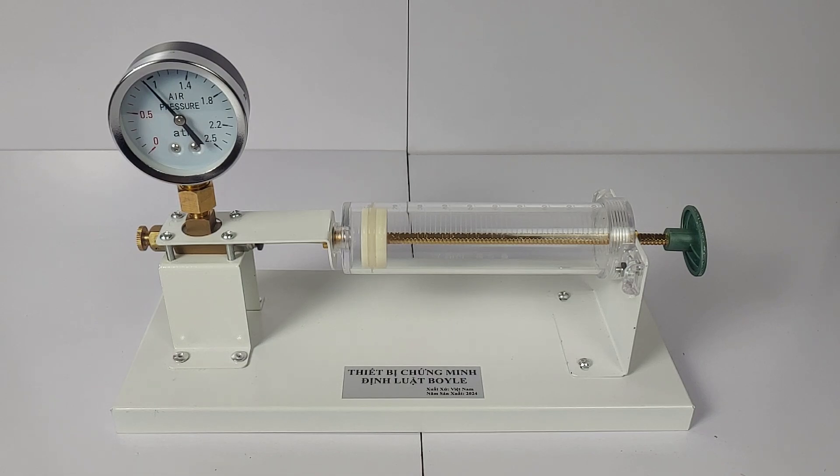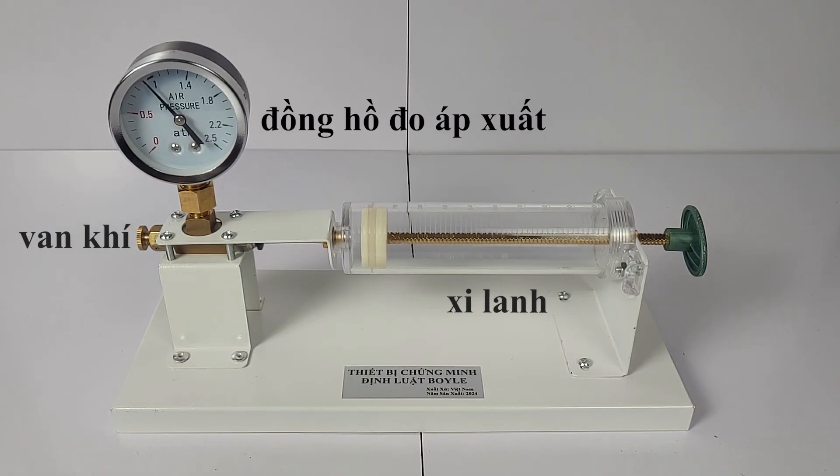Welcome back to E360 and this is the guide to use the equipment demonstrating Boyle's Law. The equipment includes a gas valve, pressure gauge, and cylinder for adjusting gas volume.